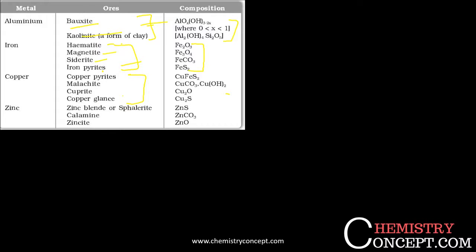Zinc is found in the form of zinc blende, calamine, and zincite — these are the names of the ores for zinc. This is the chemical composition for zinc and this is the chemical composition for copper.